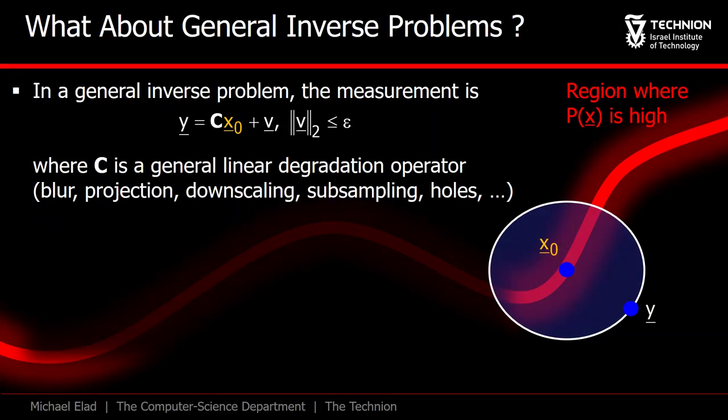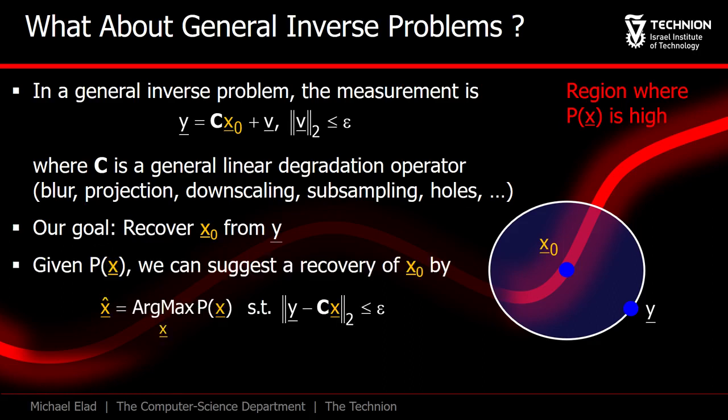In fact, the very same treatment can be given to more general inverse problems, in which y is a degraded version of x0. In this case, y is given as a degradation operator C multiplying x0 plus additive noise just as before. In an attempt to recover x0 from y, let's suggest using MAP again, finding the image x that maximizes the probability while forcing x to be in the ellipsoid defined by the measurements equation.